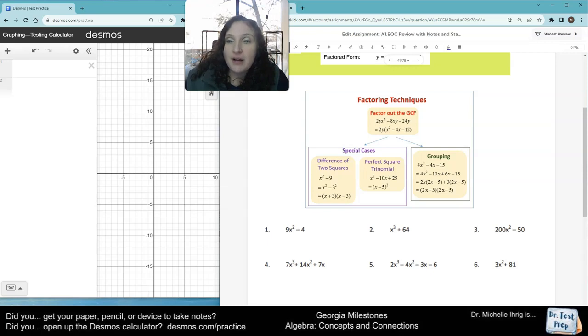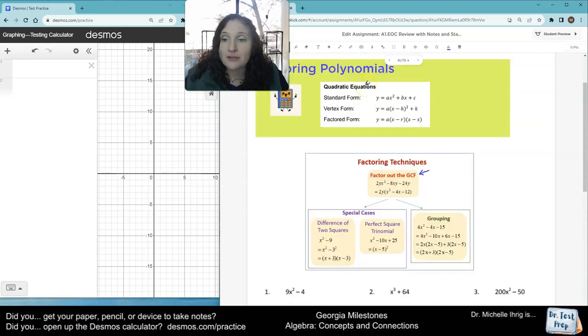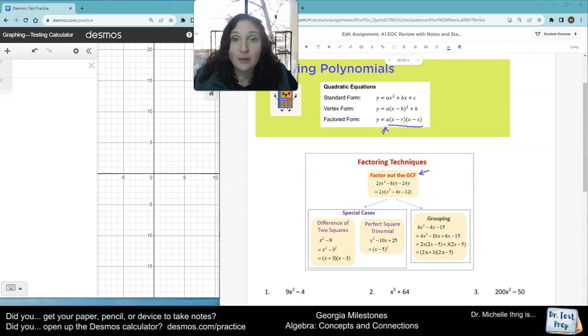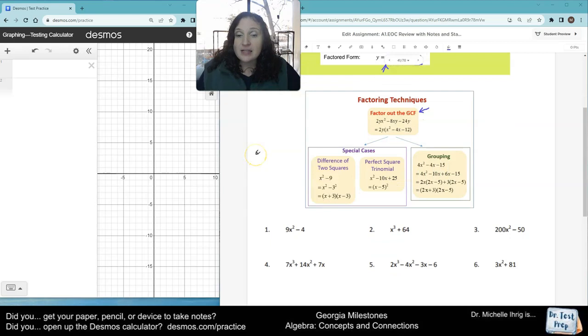First of all, we have a couple of special cases. We always want to make sure that we look for the GCF. And if you want to know what they mean by factored form, that's what this is. So this A would be like the GCF, the greatest common factor. Now what we're going to do is here, there's no number that can go into 9 and 4. So this one doesn't have a GCF.